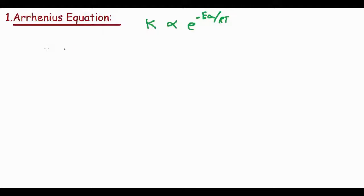This can be written as K = A × e^(-Ea/RT), where A is the frequency factor and the rest are the same.